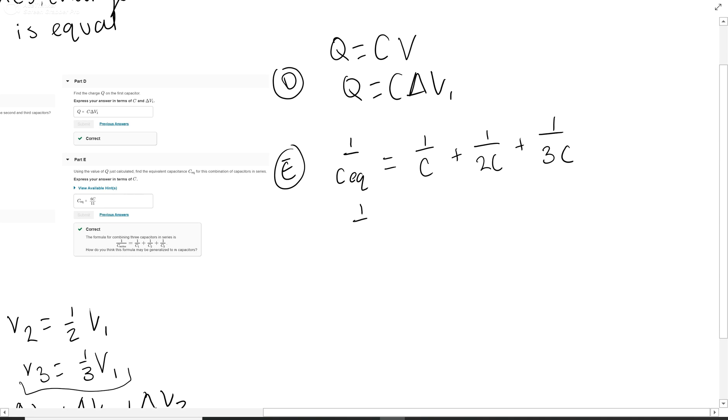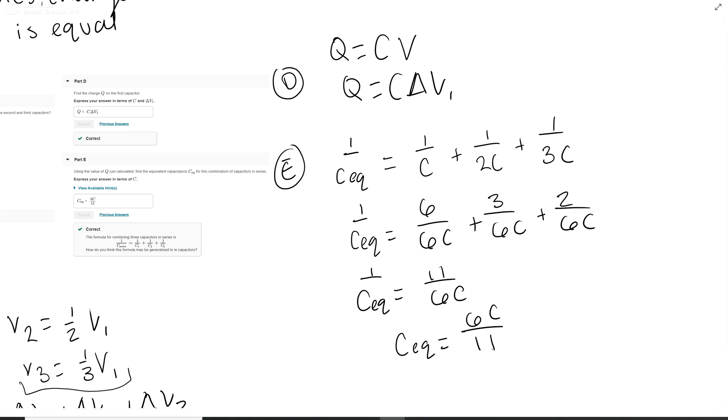Now you have to use some common denominators. So you get 11 over 6C, and then you invert both of those. And you get 6C over 11 is what Ceq is equal to. Your equivalent capacitor. And that is your answer for E.